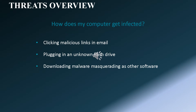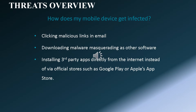How does my computer get infected? By clicking malicious links in your email. Also, it can penetrate by plugging in an unknown flash drive straight away to your computer without scanning it, and by downloading malware mimicking legitimate software. How does my mobile device get infected? You will get it by doing similar actions: clicking malicious links in email, downloading malware masquerading as other software, or installing third-party apps directly from the internet instead of via official stores such as Google Play or Apple's App Store.